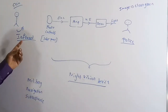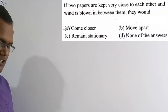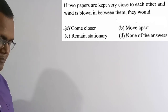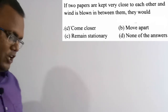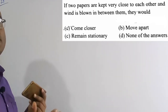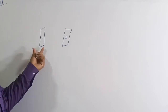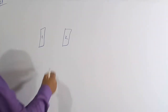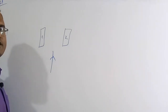Now for the 29th question: If two papers are kept very close to each other and wind is blown between them, they would — option A come closer, option B move apart, option C remain stationary, option D none of the above. Option A, come closer, is correct. Let's do a small experiment to explain this.